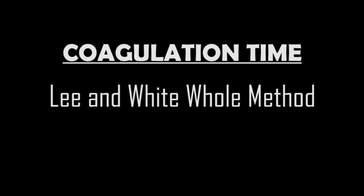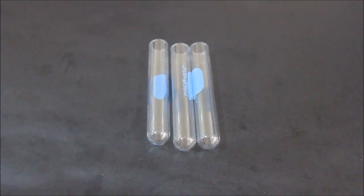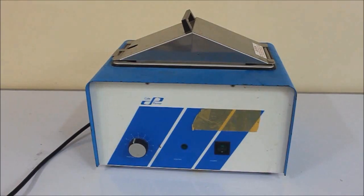Coagulation time is the time required for whole blood to clot. Some materials needed for the Lee and White method are three 5 mL glass test tubes, disposable syringe with needle, timer, and water bath.